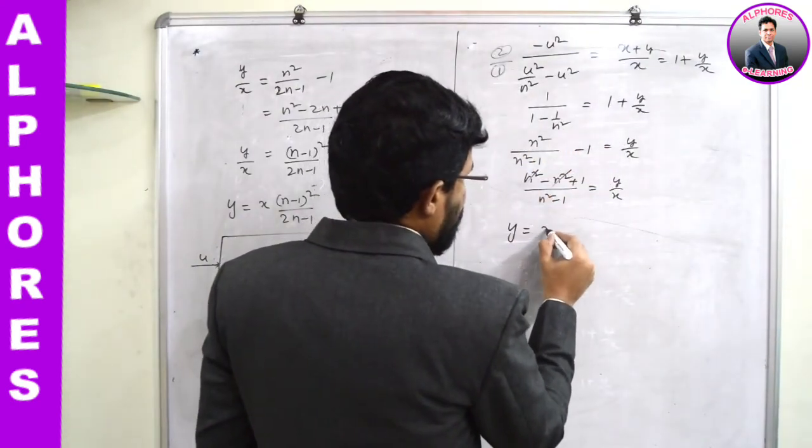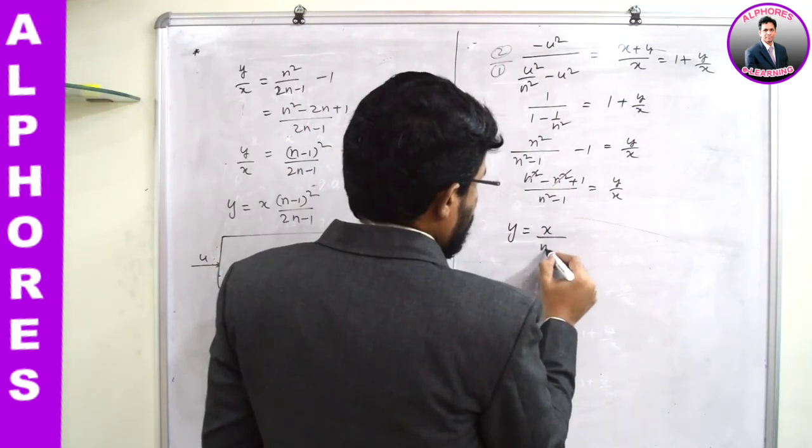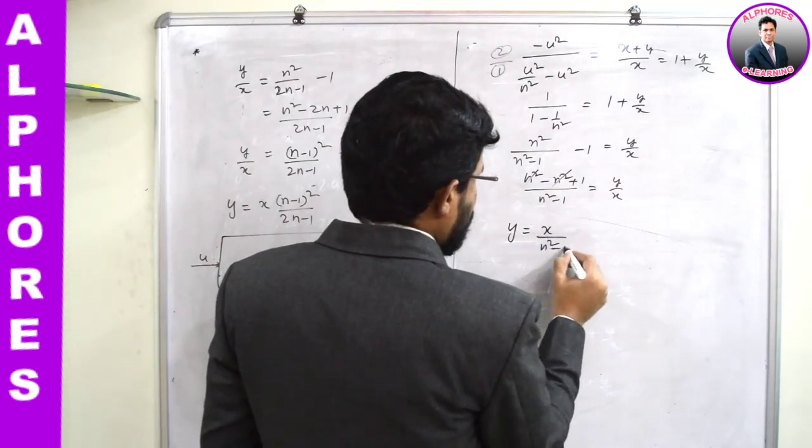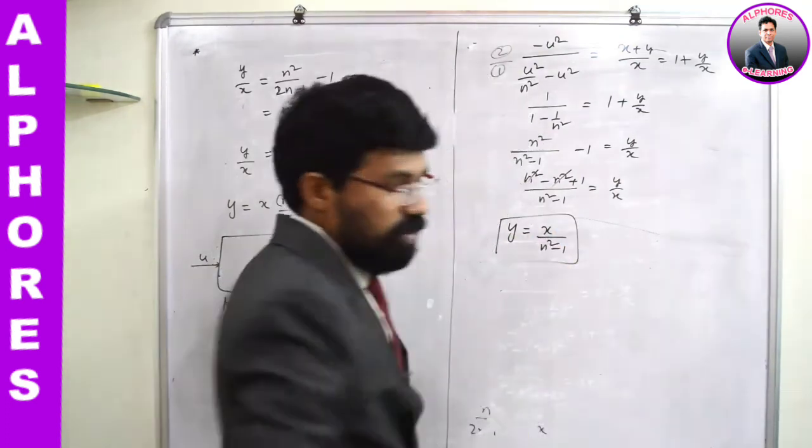So y = x / (n² - 1). That is the result for this case.